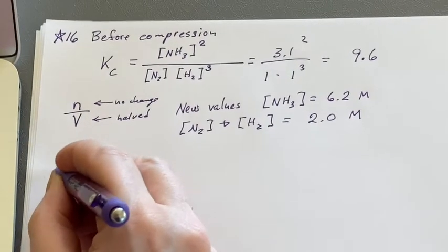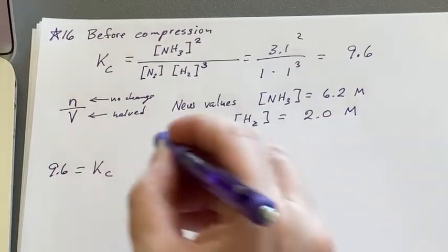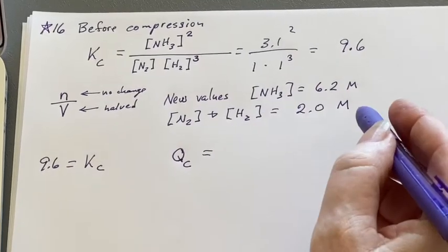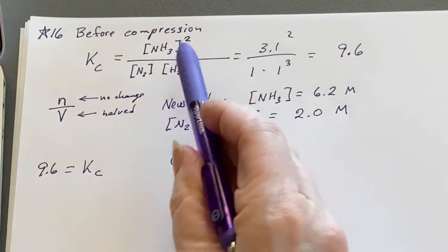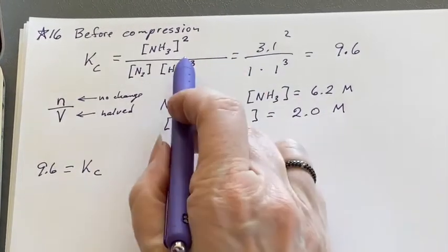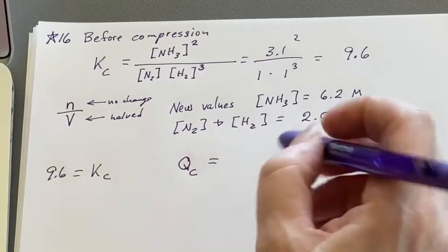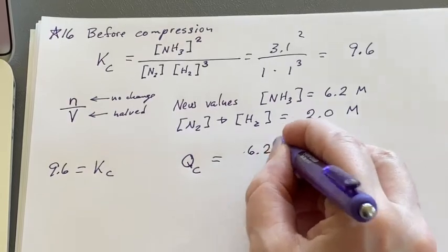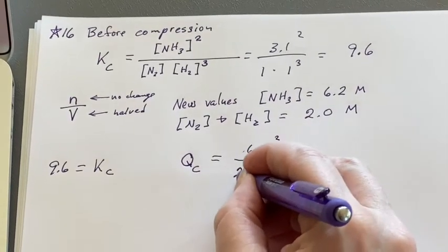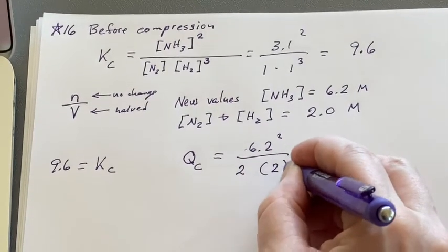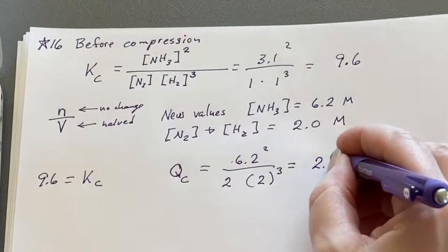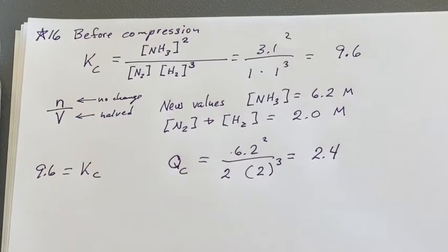If we want to talk about comparing Kc, which we know is 9.6 at this temperature, Qc I'm going to calculate the same way I did before. These are no longer in equilibrium, we're just going to see what the number is. We would have 6.2 squared, and we would have 2, and then 2 cubed. We get 2.4. Well, that is a lot smaller.